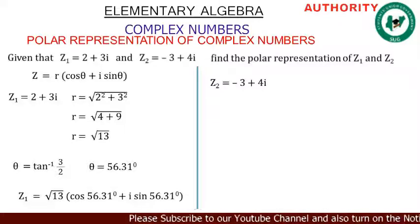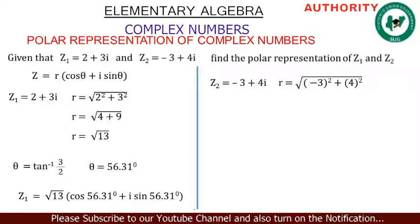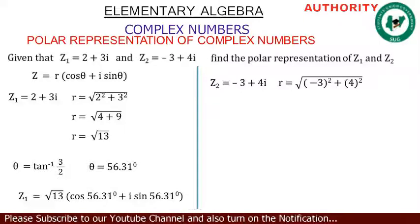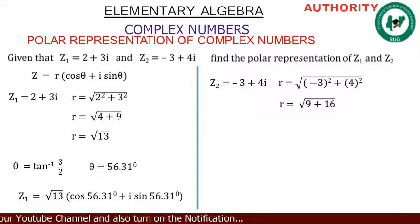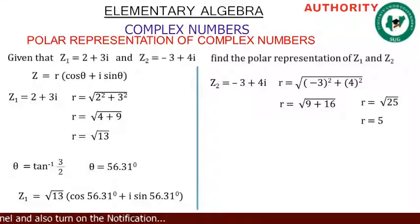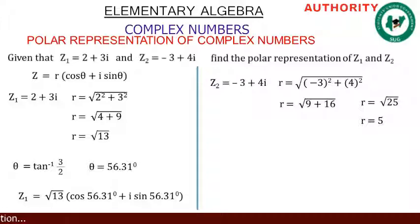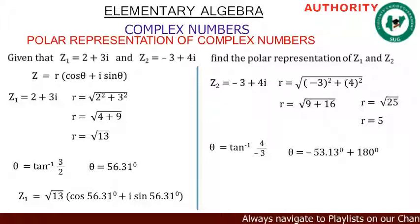Now for z₂ = −3 + 4i. Finding r: r equals √((−3)² + 4²) = √(9 + 16) = √25 = 5. So r equals 5. For θ: θ equals tan⁻¹(4/−3).